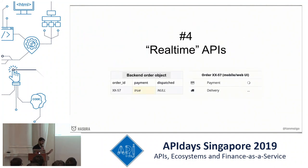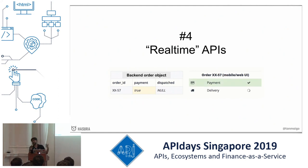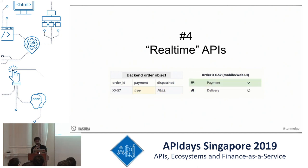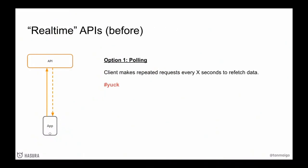The coolest thing about GraphQL is that it supports real-time natively. Imagine an e-commerce order where payment gets processed asynchronously and changes to true, then we dispatch a delivery agent and that changes to true. This happens asynchronously — milliseconds, seconds, minutes. With a REST API, there are two ways: polling, where the client makes repeated requests to fetch new data and you animate it to seem real-time, but it feels disgusting and is bad for performance on mobile.